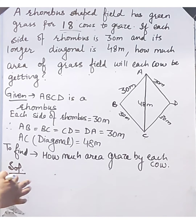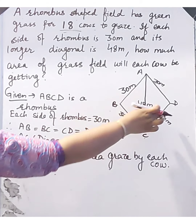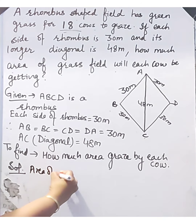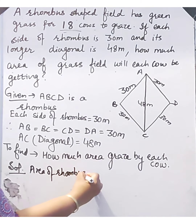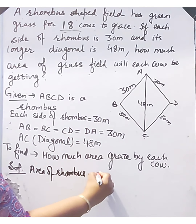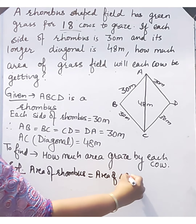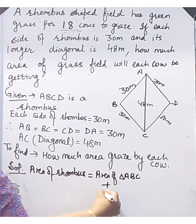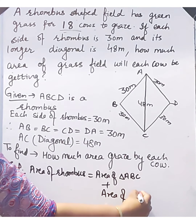Firstly, we will find the area of rhombus ABCD. The area of the rhombus is equal to the sum of the areas of its two triangles: area of triangle ABC plus area of triangle ADC.